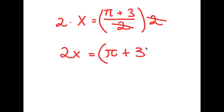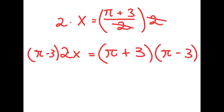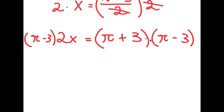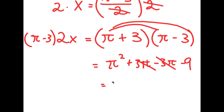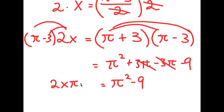From here, I'm going to multiply both sides by pi minus 3. So I have (pi minus 3) times 2x is equal to (pi plus 3)(pi minus 3). Now, pi plus 3 times pi minus 3 — I distribute the pi and get pi squared plus 3pi minus 3pi, which cancel out, plus 3pi minus 3pi, leaving minus 9. So this is just pi squared minus 9. On the left-hand side, distributing 2x gives me 2x·pi minus 6x.